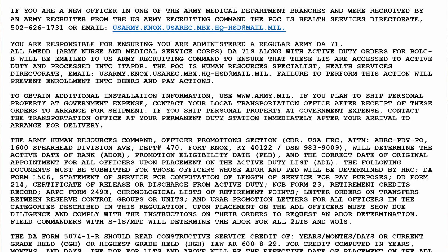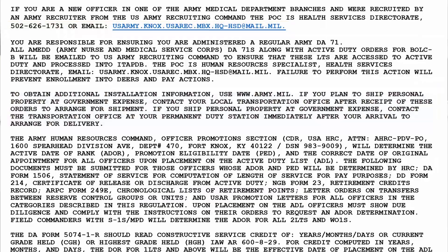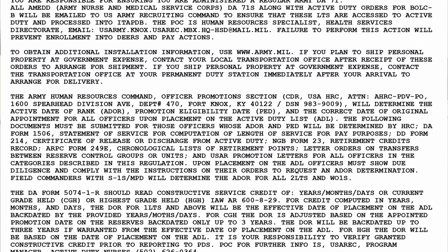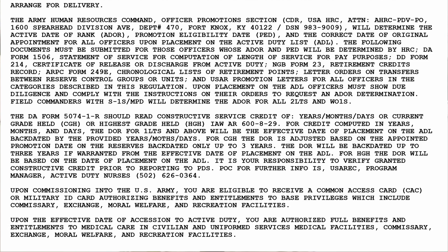The rest of these instructions contain a lot of really helpful information and resources, so read them thoroughly. I've highlighted here some that may be the most relevant, including contact information if you have questions about your orders, information on shipping your household goods, obtaining more information about your duty station, and some helpful resources if your spouse is seeking employment in your next location. So that's how you read your orders. Remember, if you have any questions, be sure to reach out to your recruiter, station commander, or OIC. They're your primary points of contact up until you report to your duty station and your unit leadership is available to assist.